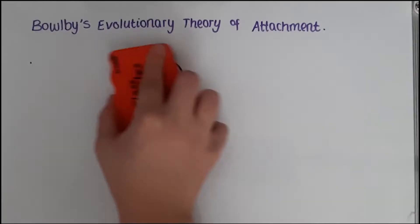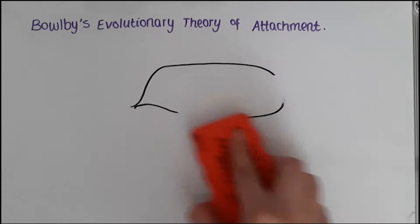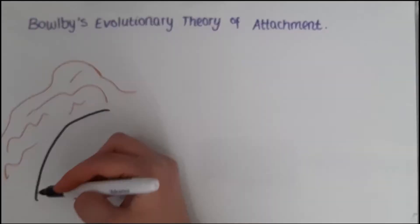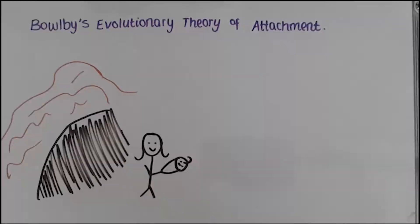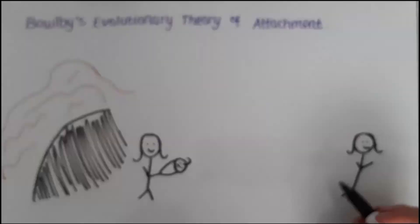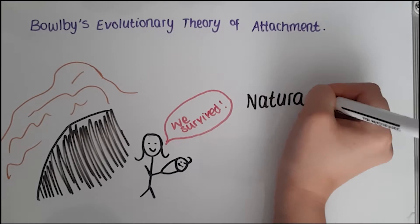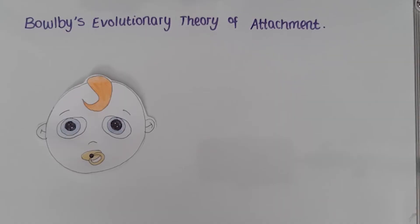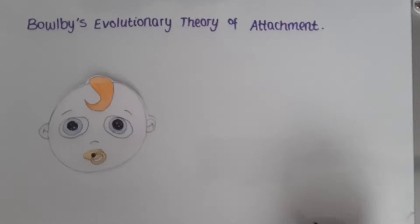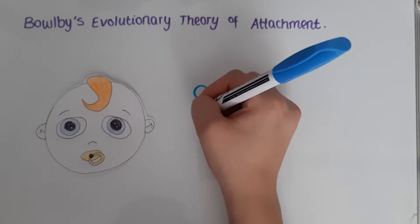Bowlby believed that an infant's attachment to their mother was innate. He suggested that, during evolution, it would have been the babies who stayed close to their mother who would have survived. This means, through natural selection, infants are biologically programmed with innate behaviours that ensure an attachment occurs. Therefore, he hypothesised both infants and mothers have evolved a biological need to stay in contact with each other. Babies are born with the tendency to display certain innate behaviours, called social releasers.